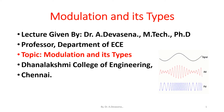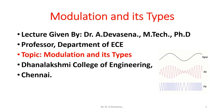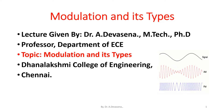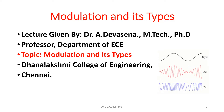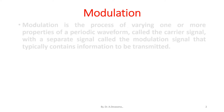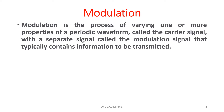Good morning, I am Devi Zainar. In this lecture we are going to discuss about modulation and its types. Modulation is the process of varying one or more properties of a periodic waveform called the carrier signal with a separate signal called the modulation signal that typically contains information to be transmitted.